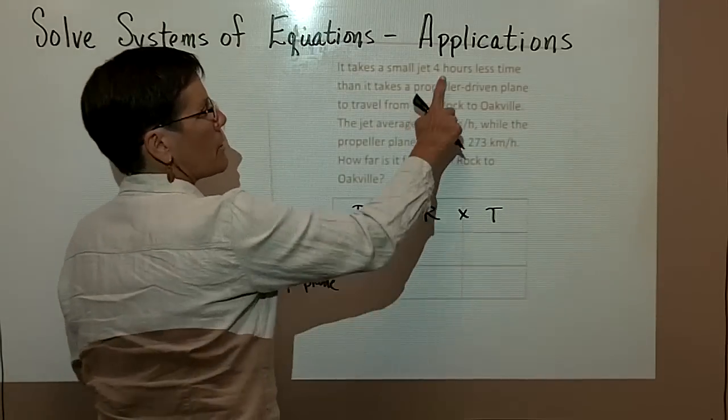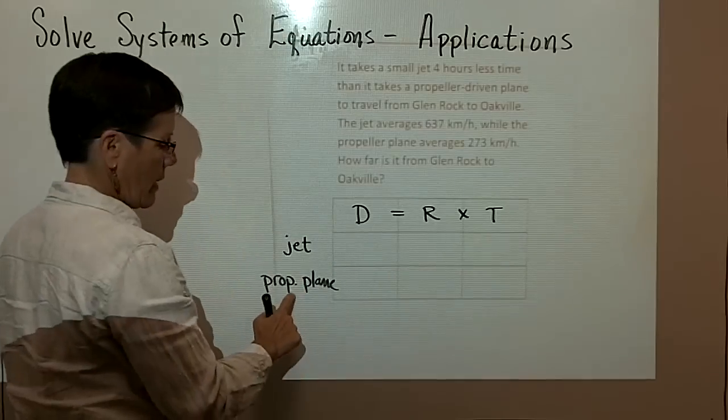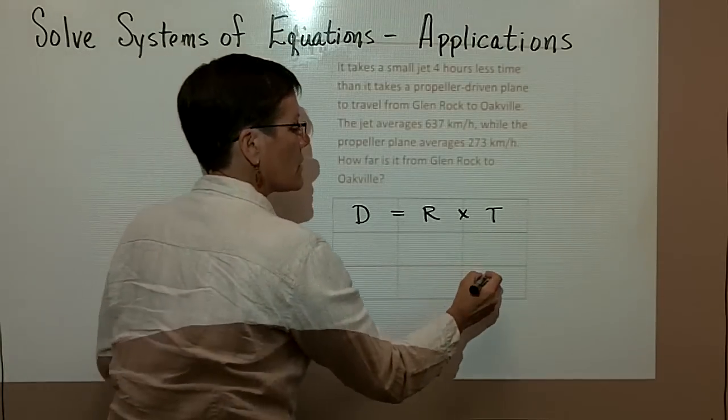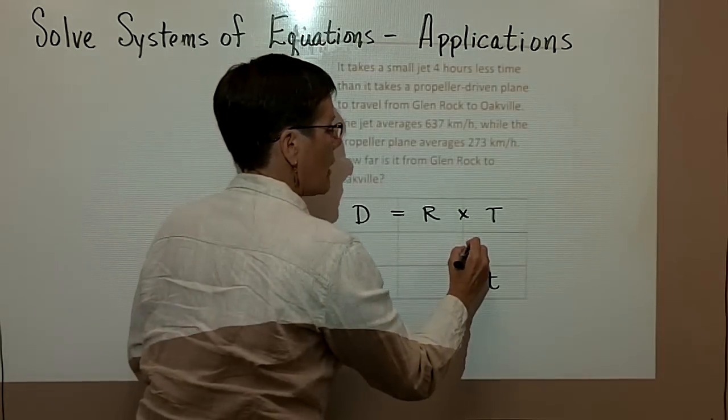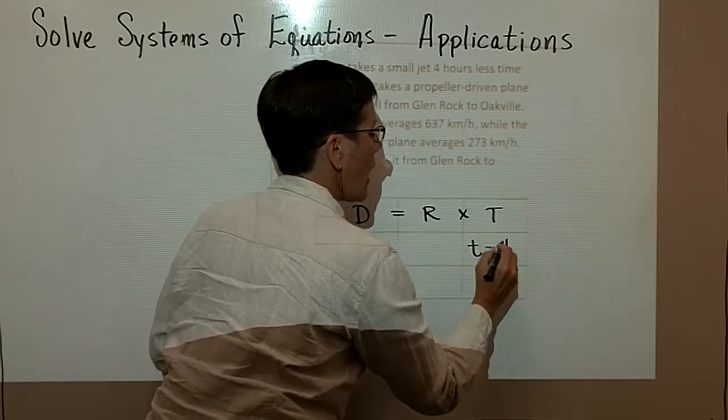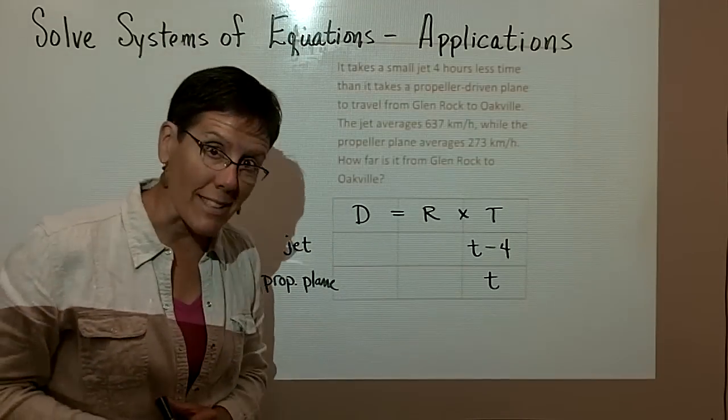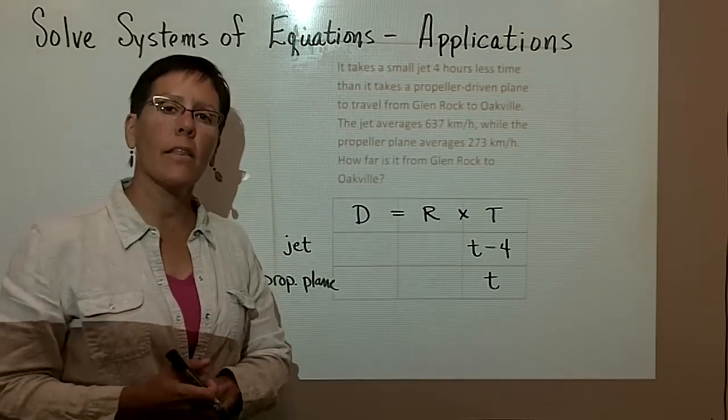The jet's going to take four hours less time than the propeller driven plane. So what do you say we let this be T for the propeller driven plane, and then we let the time for the jet to be four hours less than that one?